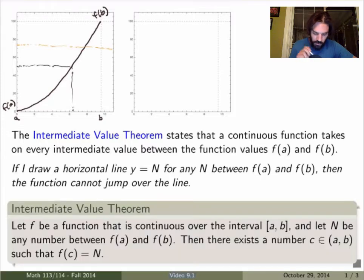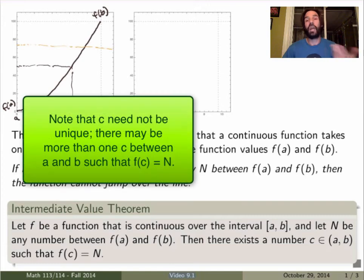So formally, the Intermediate Value Theorem statement is the following. Let f be a function that is continuous over the interval [a,b], and let capital N be any number between f(a) and f(b). Then there must exist a number c, or a point c between a and b, such that the value of the function at c is exactly equal to capital N, and that's got to be true for any capital N between f(a) and f(b).